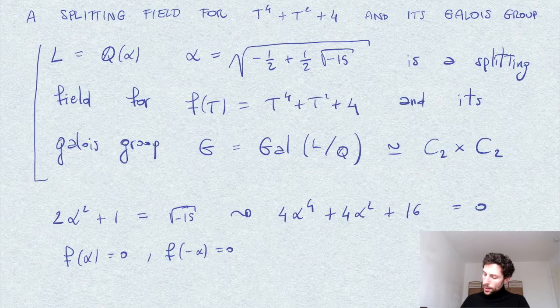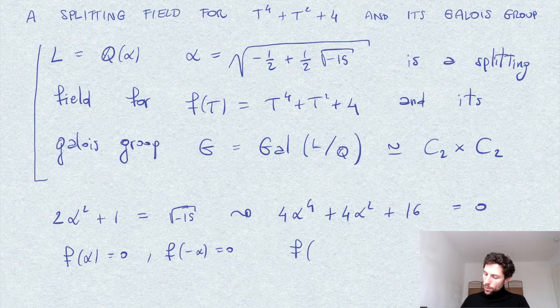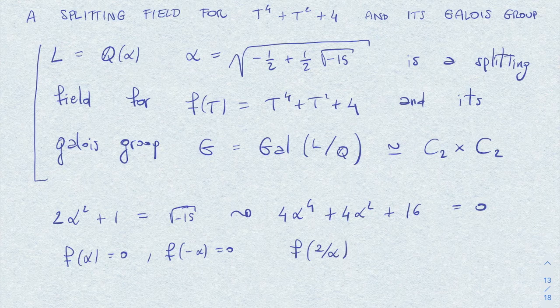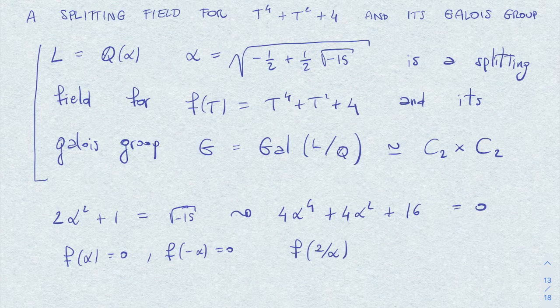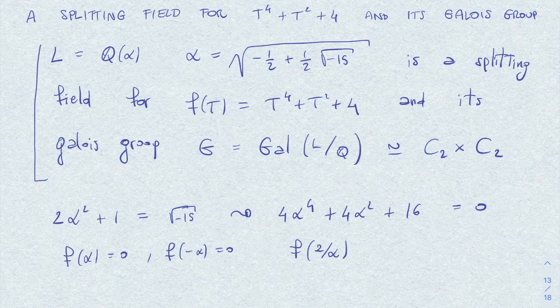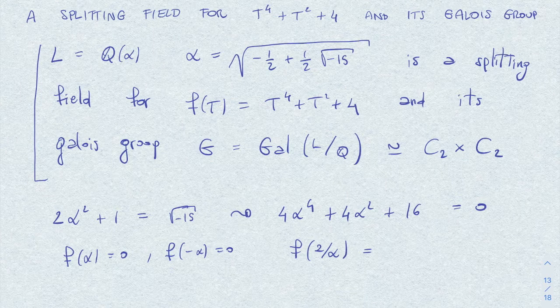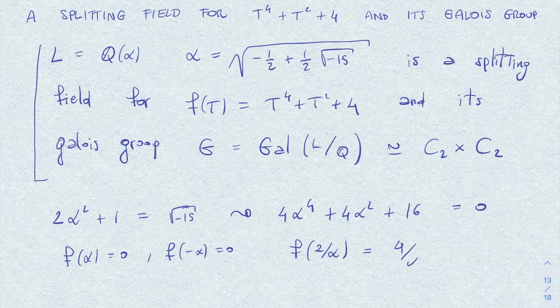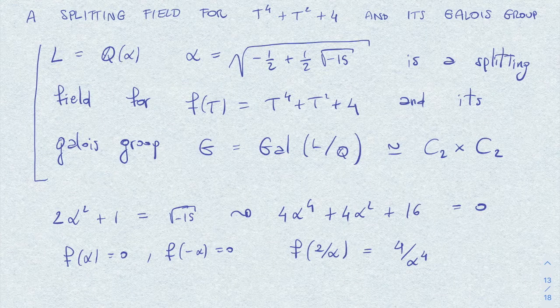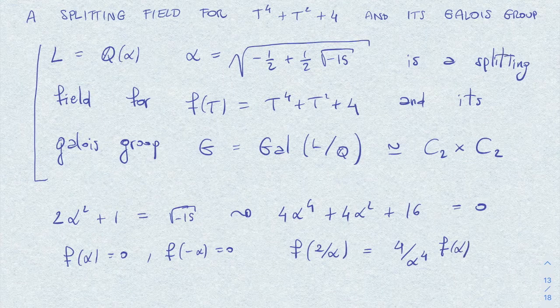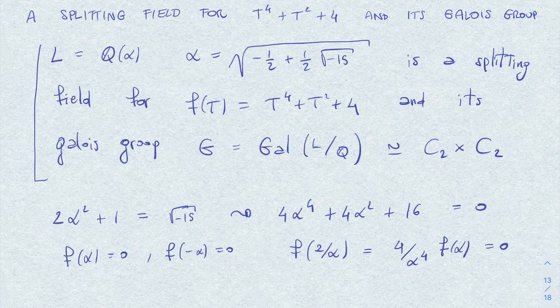And similarly, you can check that f of 2 over alpha is another root, because with a couple of algebraic steps, you can easily prove that this can be written as 4 over alpha to the power 4 times f of alpha, which obviously is 0.